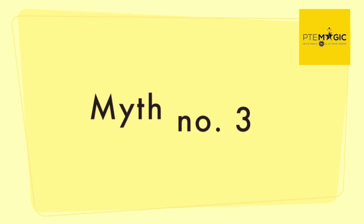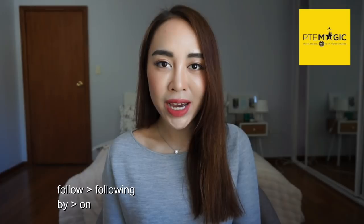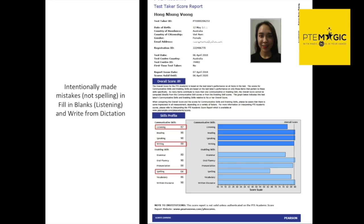A couple of months ago, I took a real test and purposely wrote incorrect words in fill-in-the-blanks, listening, and write from dictation tasks. For example, if I heard 'follow' I would write 'following', and if I heard 'by' I would write 'on'. I made about six intentional mistakes like that. Even though I spelled all the words correctly, I used completely different words from the correct answer, which resulted in a poor spelling score as well as a reduced listening score.